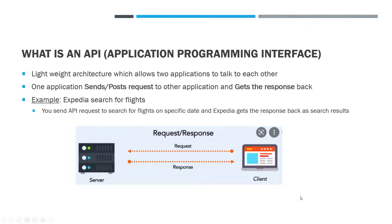As you can see in this picture, you on your client machine send the request — in this case to the Expedia server. It gets all the results, processes them, and sends them back to you as the response. That is a very simple API call.